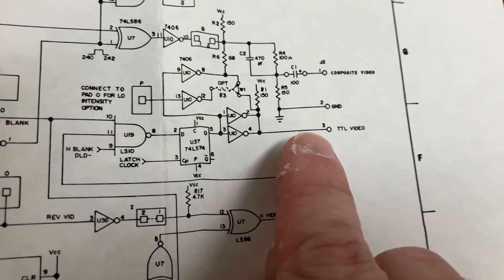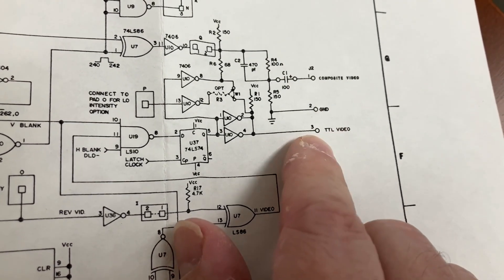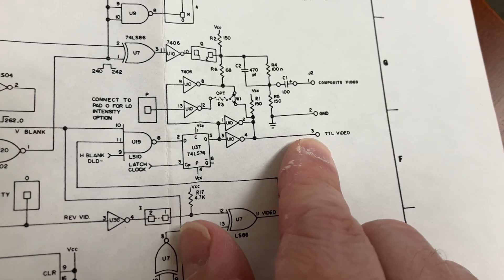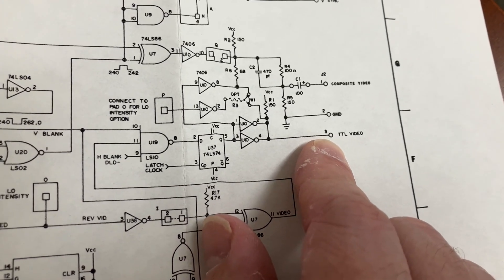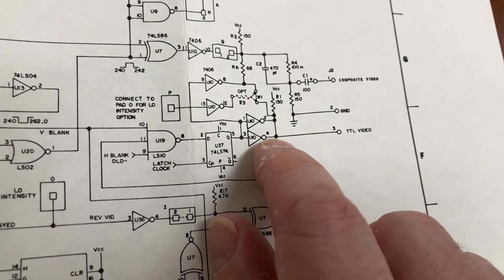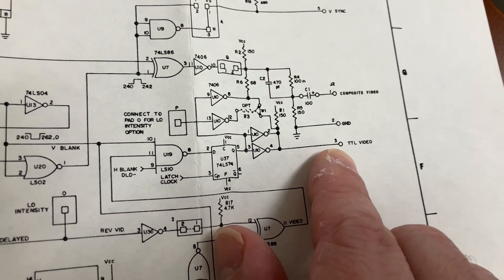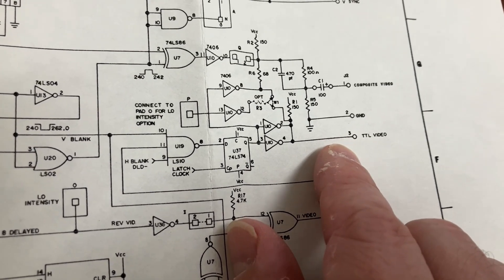So this is the part of the schematic that's suspect. Here's the TTL video output, and it is not strong enough. This should be like zero to five volts or something close to five volts, four something volts. And right now it's outputting quote unquote true at around 120 millivolts.